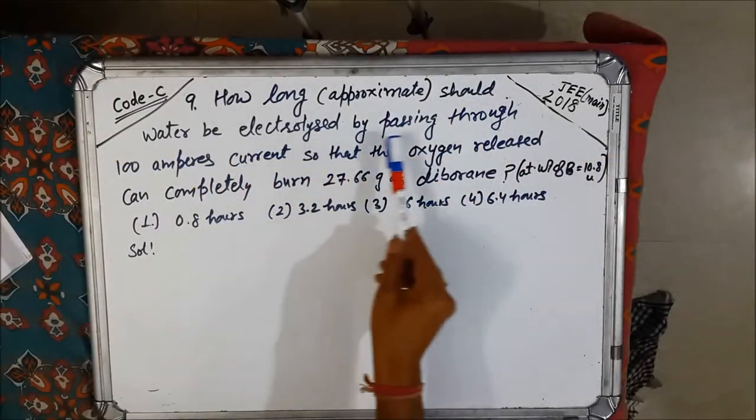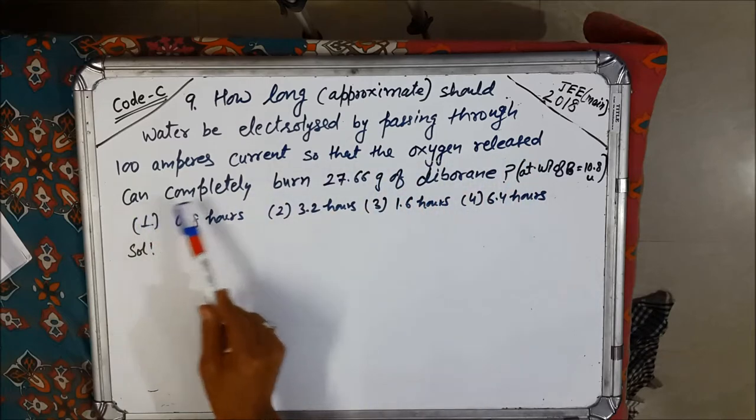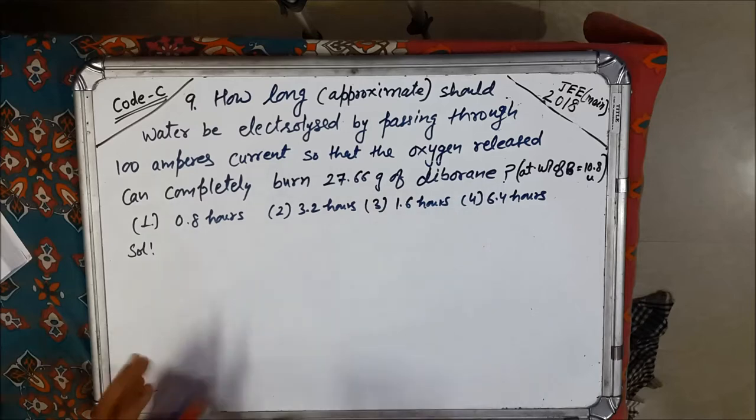How long should water be electrolyzed by passing through 100 amperes current so that oxygen released can completely burn 27.6 grams of diborane?